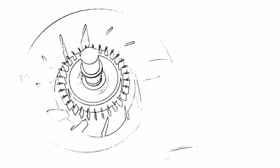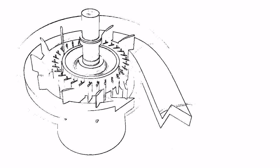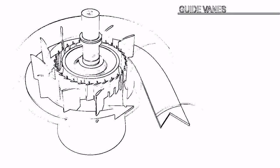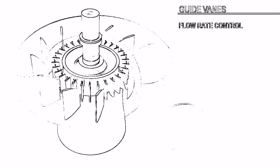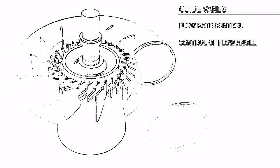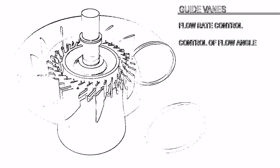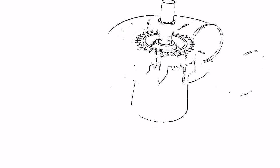Demand for power may vary over time. The guide vein mechanism is used to control water flow rate and make sure that power production is synchronized with power demand. Apart from controlling flow rate, guide veins also control flow angle to inlet portion of runner blade. Thus guide veins ensure that inlet flow angle is at optimum angle of attack for maximum power extraction from fluid.